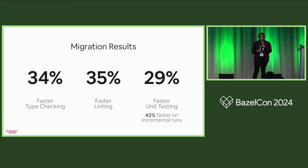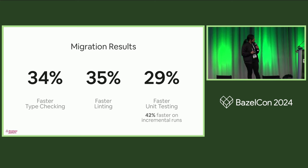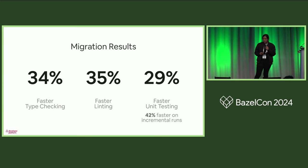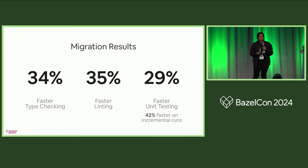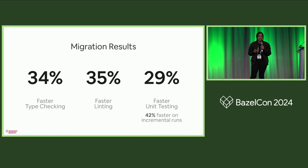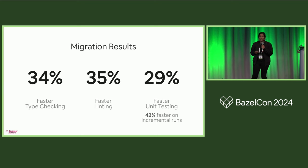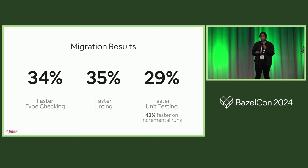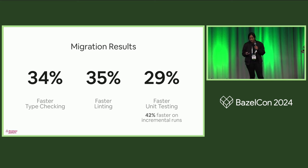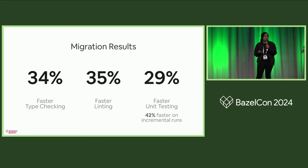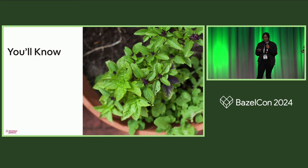We're effectively done with our migration. However, one of our tenants was that we would not move forward with Bazel unless we were either maintaining or improving performance. To that end, we introduced Bazel in CI where we knew we would receive the largest benefit. If you take a look at unit testing in particular, we saw 42% faster incremental runs, and this is because we greatly benefited from Bazel's test result caching.